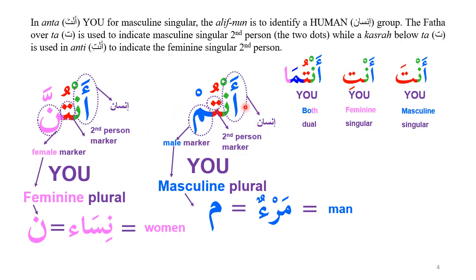Now, let me explain anthum and anthuna. 'An' — this alif-nun — has the meaning of a human group, which is short for 'insan.' Then ta is the second-person marker. And mim is the male marker — 'mar' means a man. Because mim is in the fourth position, it means plural — many men. So anthum means 'you' in the sense of men, plural.